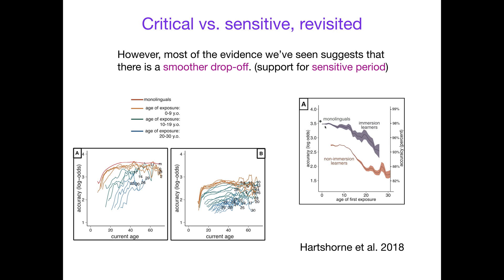Monolinguals who first learned their native language are up here at around the 98th percentile. And immersion learners at age 10, 20, or 30 — they're not down at the bottom. In fact, this axis only goes down to 82%, so they're not terrible, but they're not native. There's a smooth drop-off whether you're an immersion learner or a non-immersion learner. We don't see that discontinuous function.